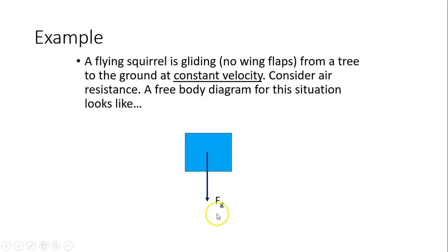If it's constant velocity, we know the squirrel has to have weight. And if it's constant velocity, that means there has to be a force going opposite of the weight. We call that air resistance because this is what they said, consider air resistance.